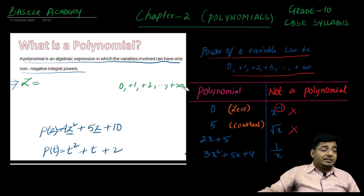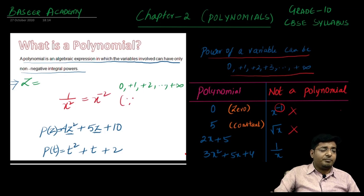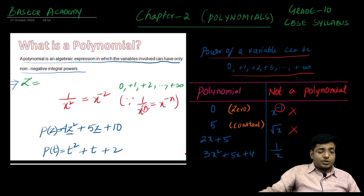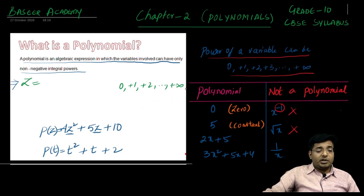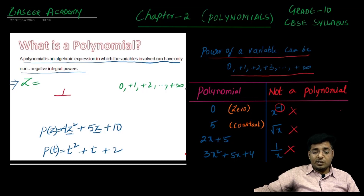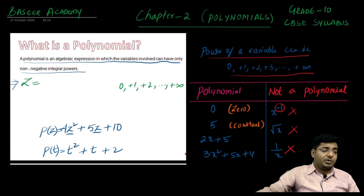If you have the variable in the denominator, it is also not going to be a polynomial. For example, 1 by x squared is not a polynomial, because 1 by x squared can be written as x to the power of minus 2. By the law of exponents, 1 by x to the power n can be written as x to the power of minus n. Since the power is negative, this is not a polynomial. So if the variable is in the denominator, it is not a polynomial. Similarly, 1 by x, and 1 over (x plus 5) — these are also not polynomials.